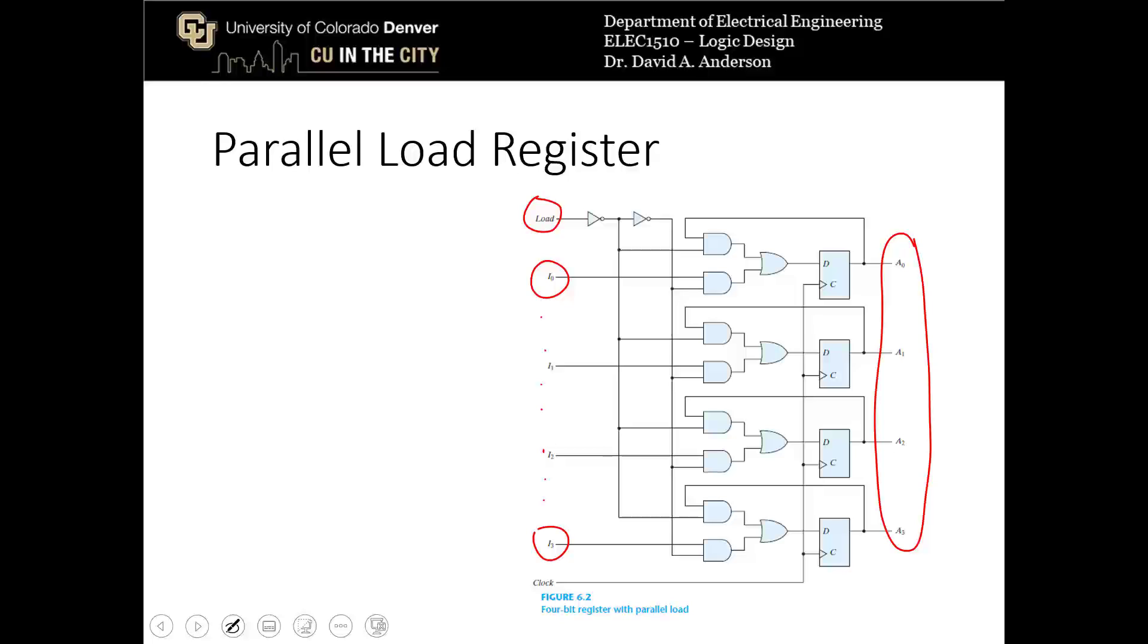If we look at one of the inputs to the flip-flops, say D right here, the logical function for D is going to be load. I'm going to call load just L, just for brevity's sake. So it's going to be L prime times A0, that's the output from the flip-flop, or L times I0.